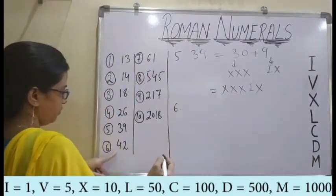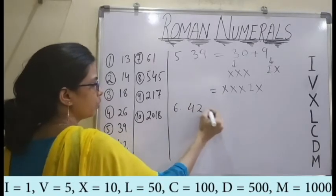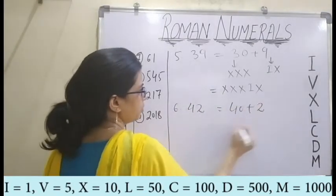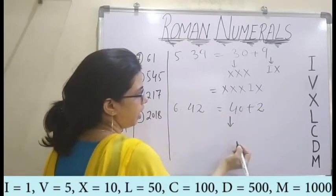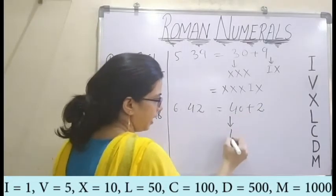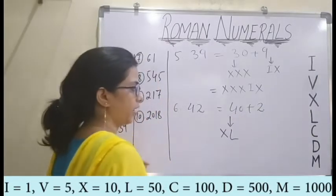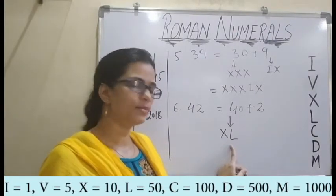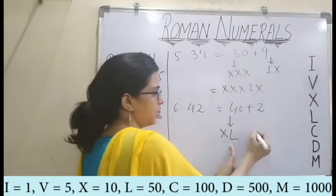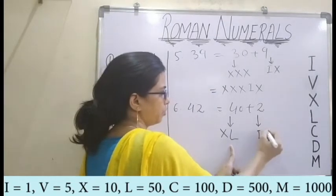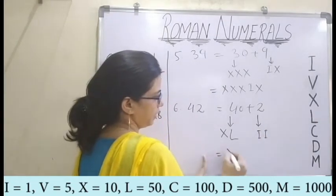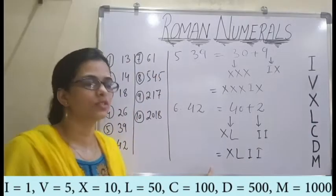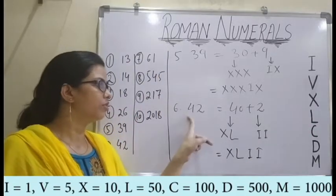Similarly, for the sixth one which is 42: I can write that as 40 plus 2. For 40, X is subtracted from 50 — so it becomes XL. And for 2, I have two I's. So I get XLII for 42.